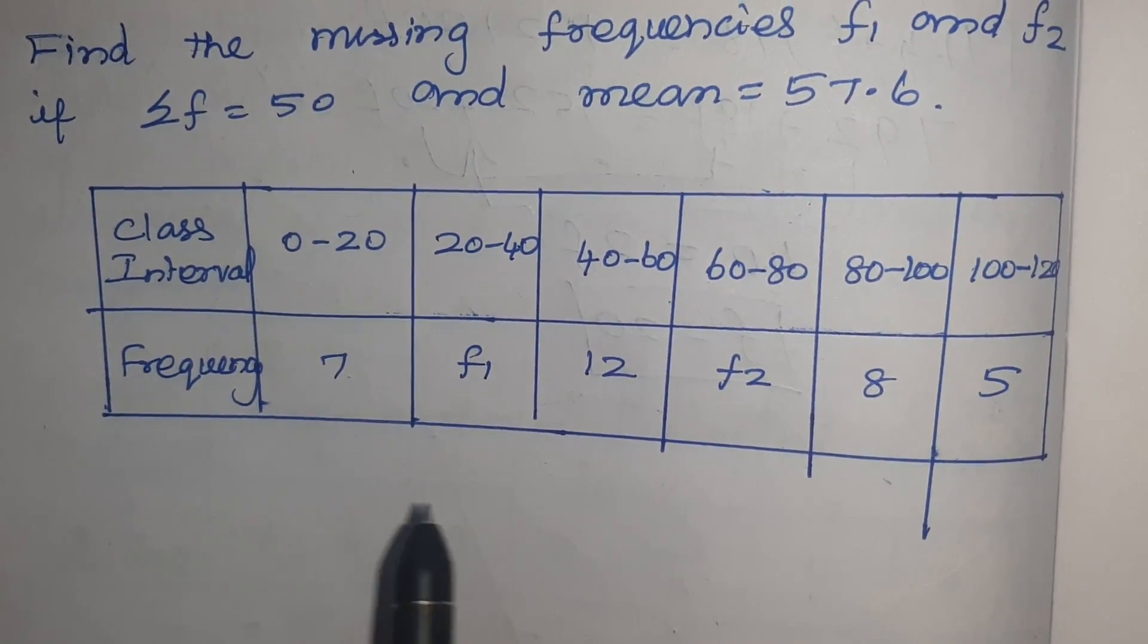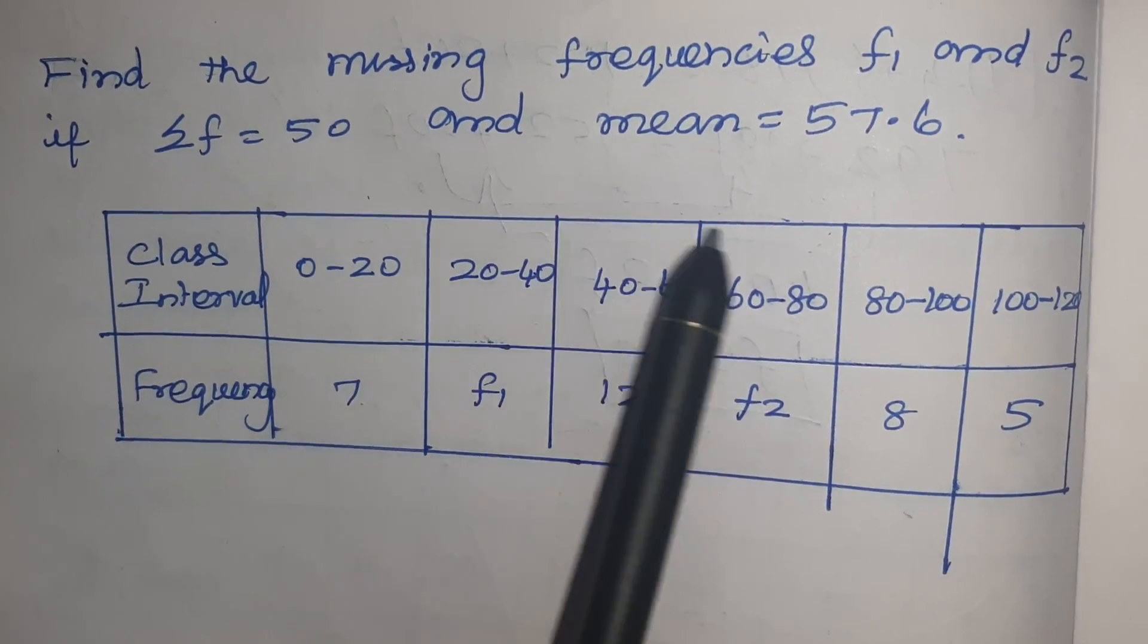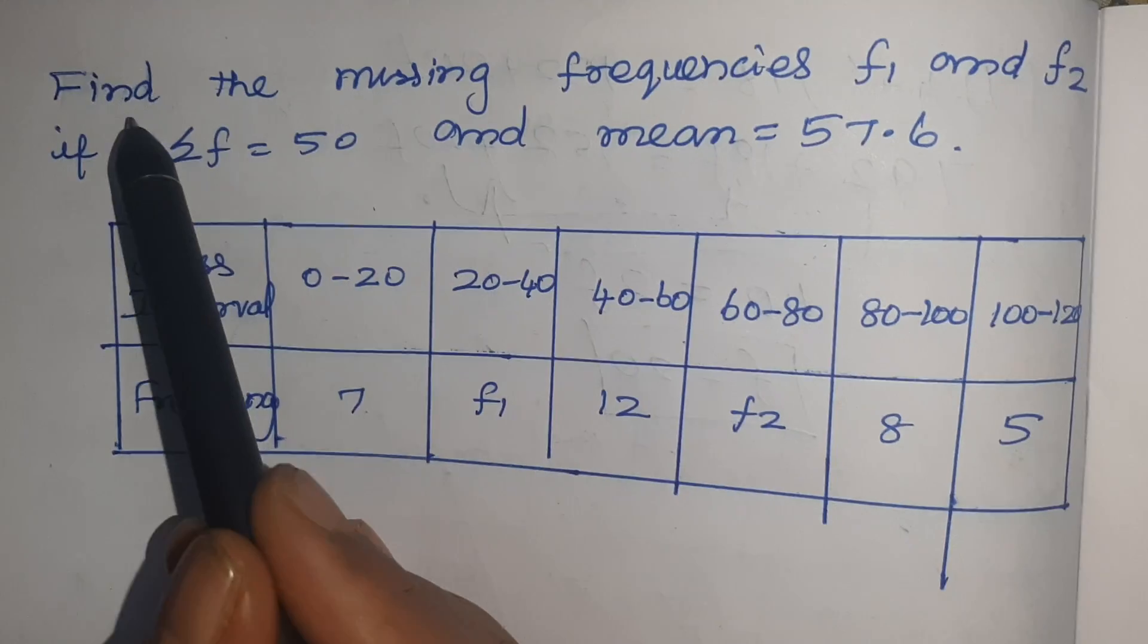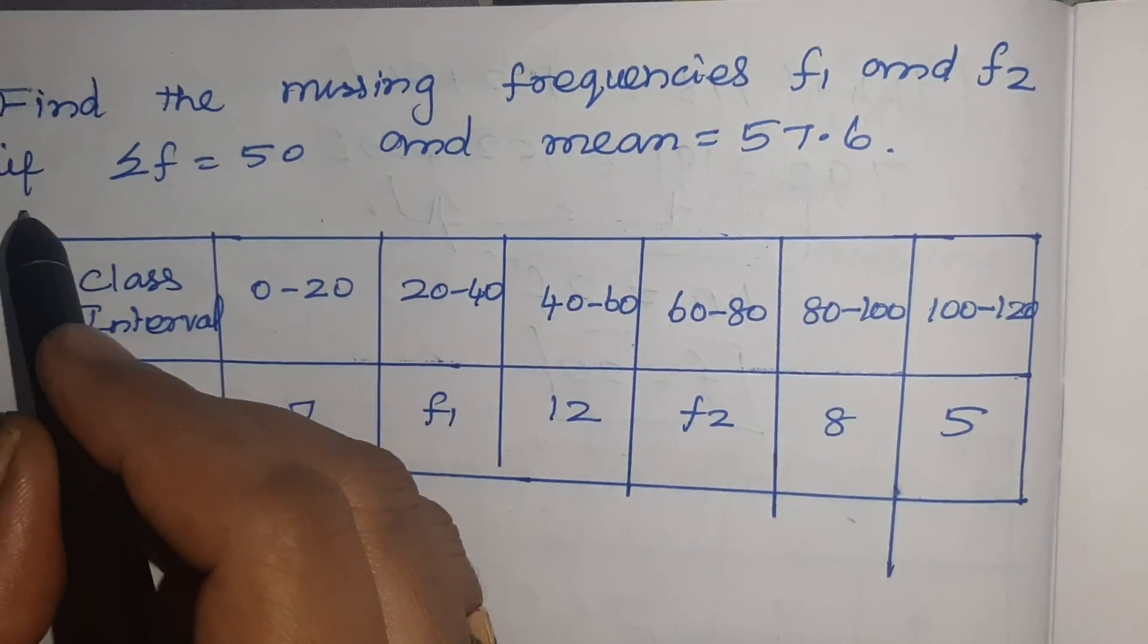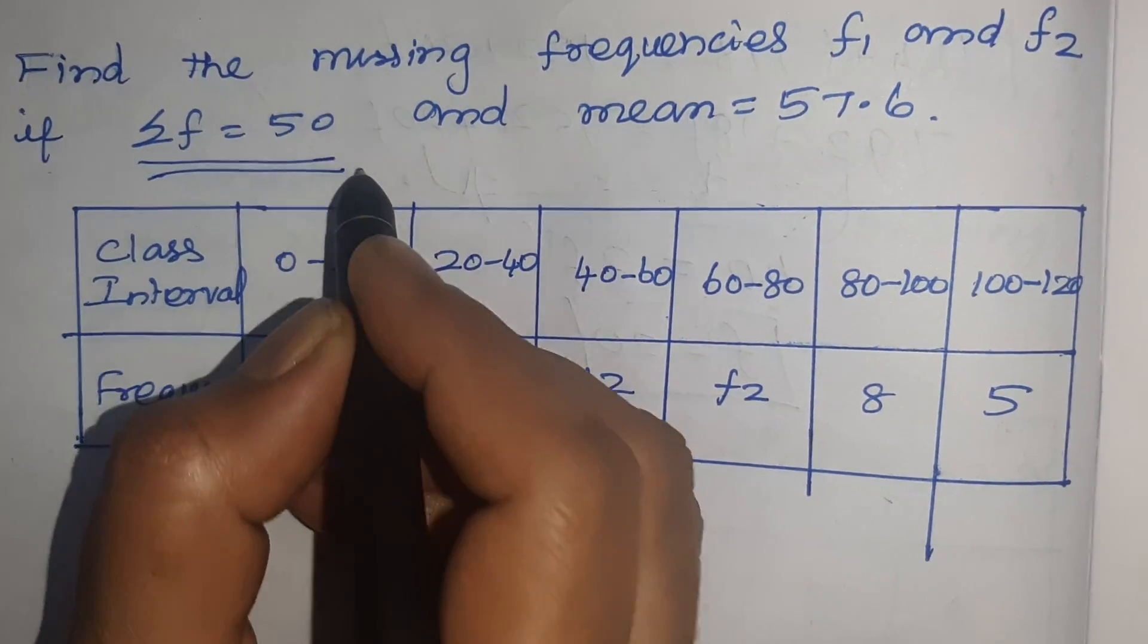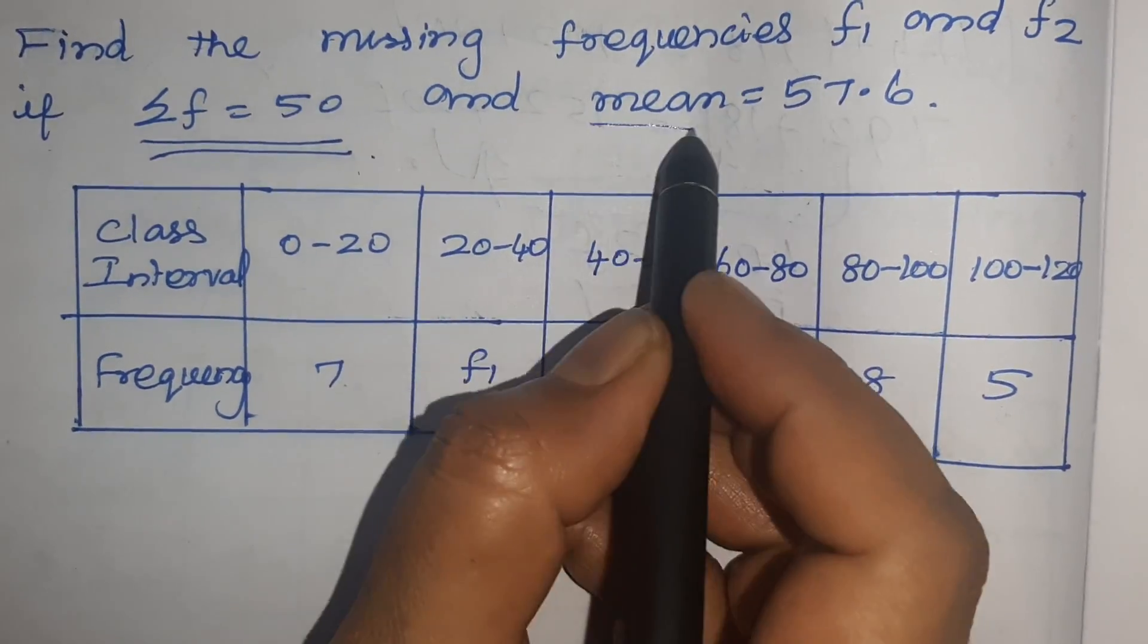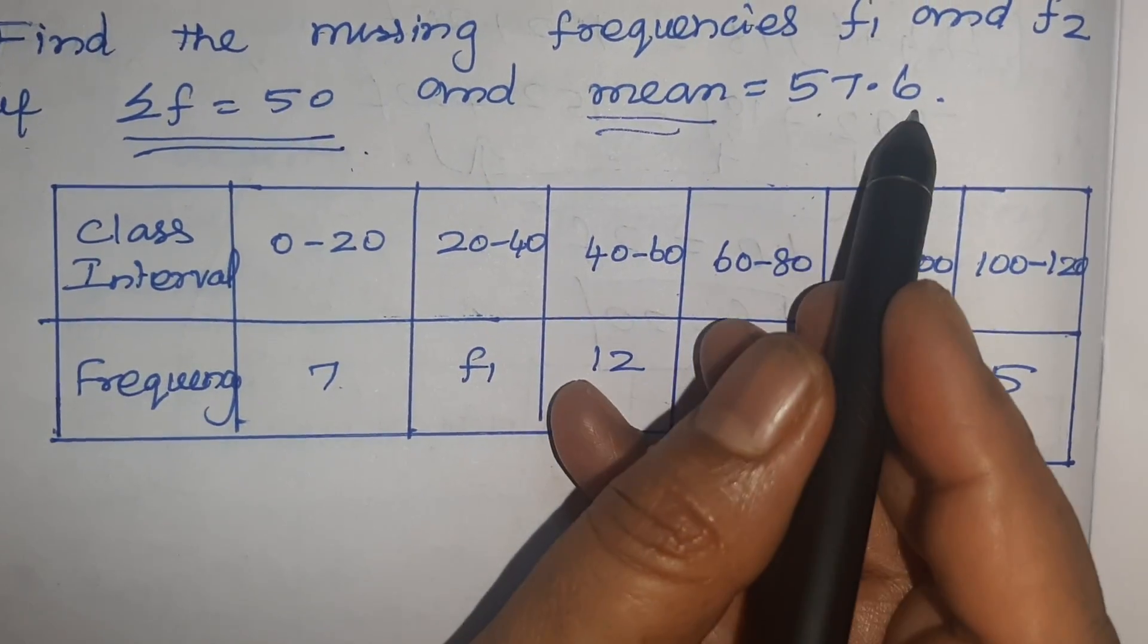Hi, I am Imal Aswath. Now I am going to teach for 10th standard. Find the missing frequencies F1 and F2 if sigma F equals 50 and mean equals 57.6.